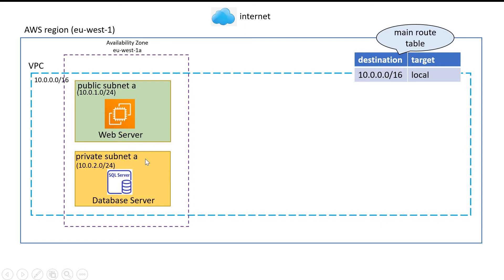We have two subnets — the first is named public and the second is named private — but in fact both of these subnets are private by default. When we create a subnet, the main route table is associated with it, so both subnets share this main route table. There are two fields in this route table: destination and target. Destination is the range of IP addresses, the CIDR block, where you want your traffic to go.